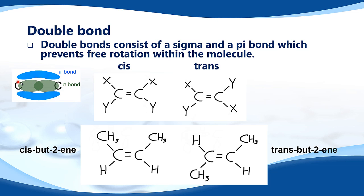Here is a carbon to carbon double bond. This is the sigma bond, overlapping of orbitals between the carbon atoms. And the pi bond is sideways overlap of p orbitals. It is this pi bond that prevents free rotation within the molecule.